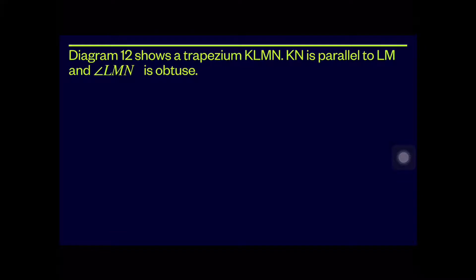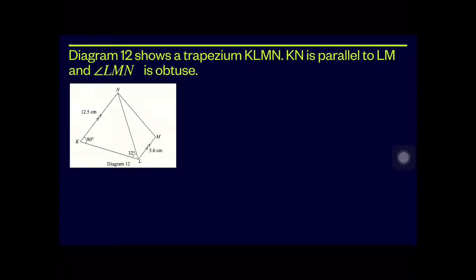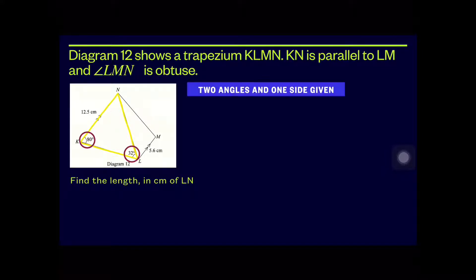Let's look at the example. The diagram shows a trapezium KLMN where KN is parallel to LM and angle LMN is obtuse. We need to find the length in centimeters of LN. Referring to triangle LNK, there are two angles and one side given, so we can use the sine rule to solve this.